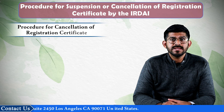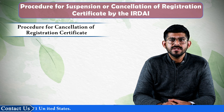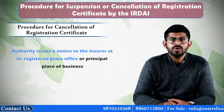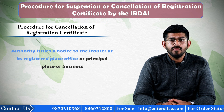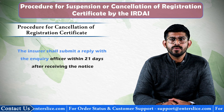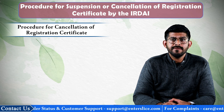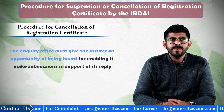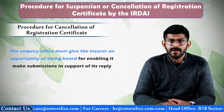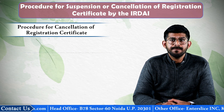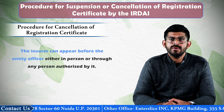Now we will discuss the procedure for cancellation of the registration certificate. The authority may order the cancellation of the registration certificate after holding an inquiry in accordance with the following procedure. The authority will first appoint an inquiry officer for the purpose of holding an inquiry. The authority issues a show cause notice to the insurer at its registered office or principal place of business. The insurer shall submit a reply with the inquiry officer within 21 days after receiving the notice. The reply shall consist of copies of documentary evidences and other evidences relied upon by the insurer. The inquiry officer must give the insurer an opportunity of being heard, enabling it to make submissions in support of its reply. The inquiry officer may ask the authority to appoint a presenting officer for the purpose of presenting its case.